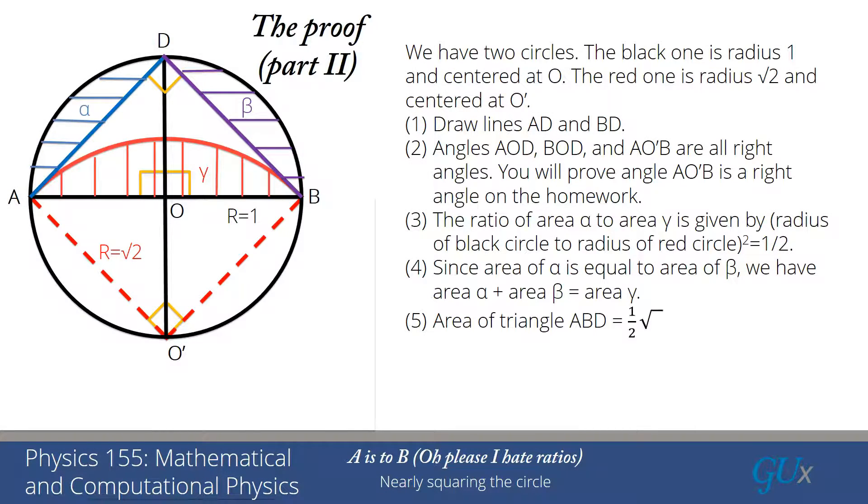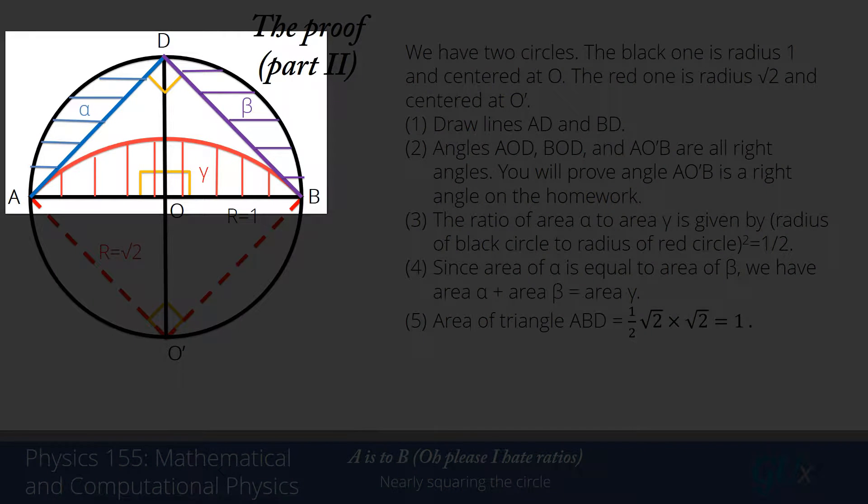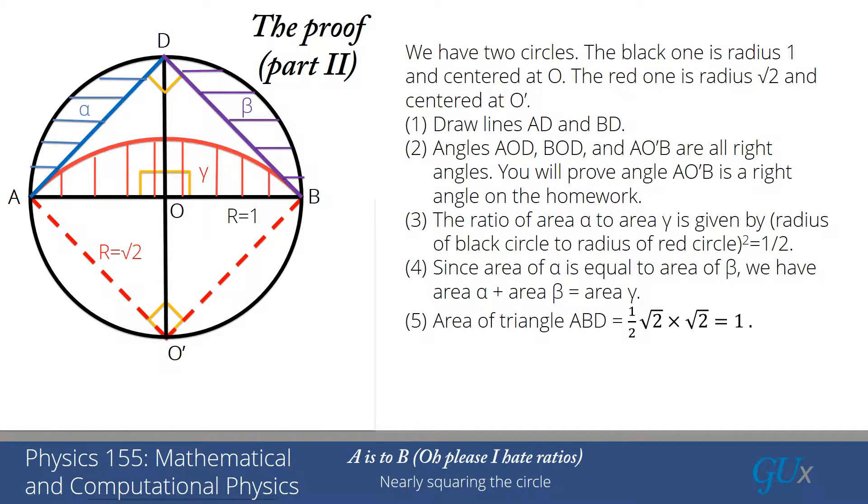All right. The next thing we're going to focus on is this triangle in the center, ABD. That triangle is a right triangle with legs that are each square root of 2 in length. And if I look at computing the area of that right triangle, I just take the product of the two legs and multiply by 1/2. So I get 1/2 times the square root of 2 times the square root of 2, which is equal to 1. So the area of triangle ABD is equal to 1.